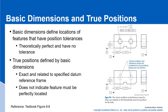Basic dimensions define the location of features that have position tolerances — they are theoretically perfect and have no tolerance in and of themselves. These basic dimensions define the perfect or true location of the holes, and the tolerance for the hole location is defined in the feature control frame.